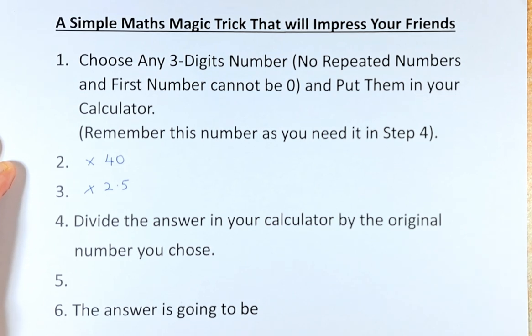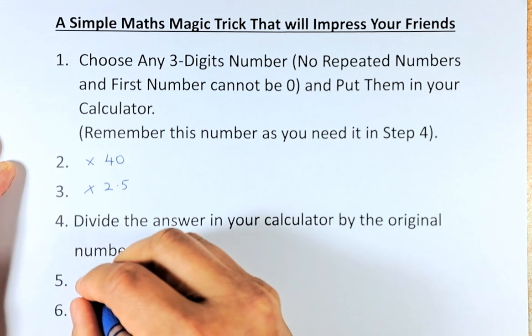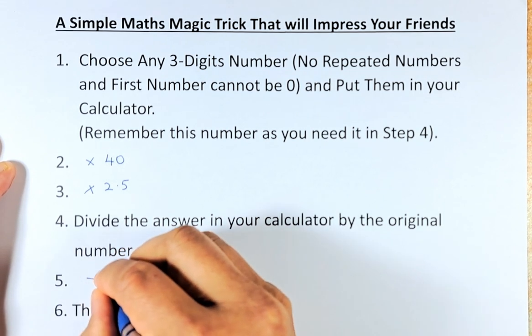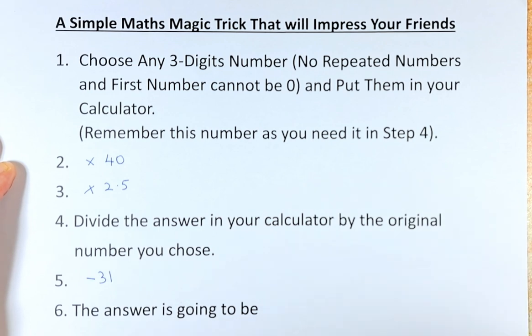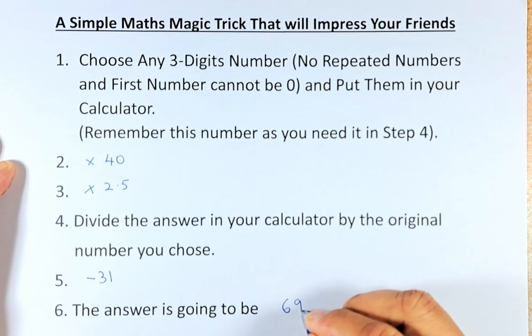Now, we are going to do step 5 and I'm going to reveal your answers in step 6. The next step, you are going to minus 31 from the answer. Got it so far? Now abracadabra again and the answer is going to be everyone's favourite number. It's going to be 69.